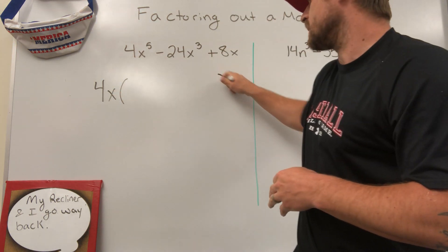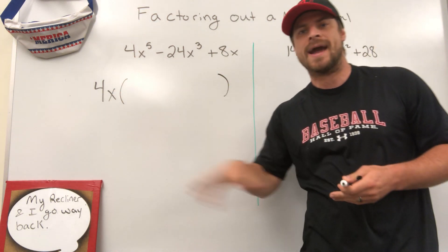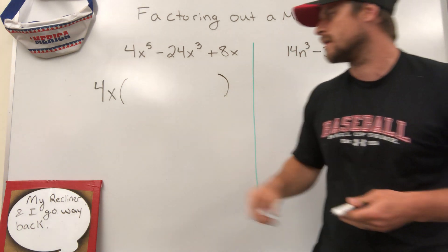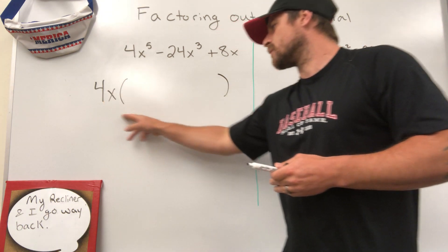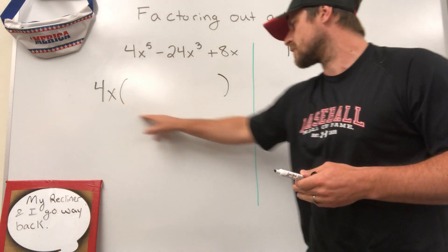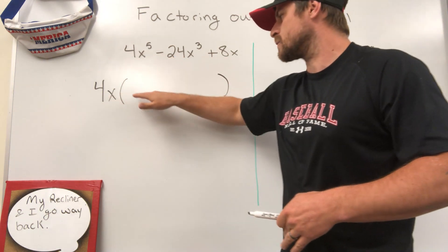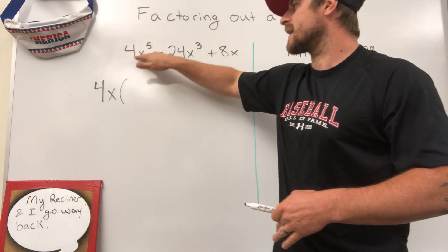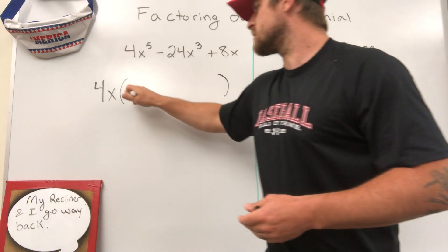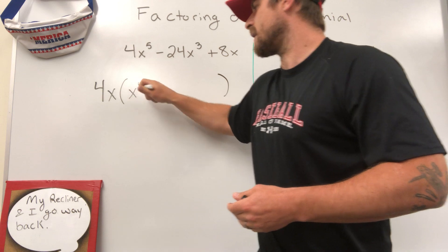And then I'm just going to put empty parentheses, and I'm going to kind of work backwards through the distributive property. So if I was taking 4x and multiplying it by three different terms, I would end up getting this. We have to ask ourselves, 4x times what makes 4x to the fifth power? Well, that would just be x to the fourth power.